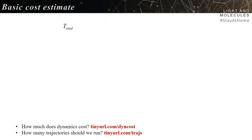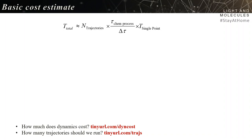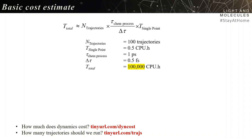You can make a basic estimate of the cost in the following way. The total time you need to allocate for your dynamics is roughly the number of trajectories times the number of single points per trajectory times the time to compute one single point. The number of single points is roughly the time of the chemical process — like one picosecond — divided by the integration time step, like half a femtosecond.